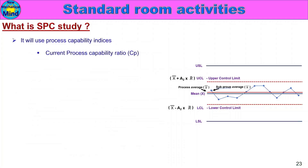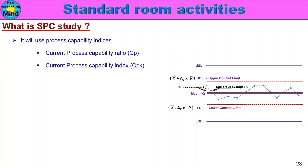Process Capability Indices used are: first, Current Process Capability Ratio, CP; and Current Process Capability Index, CPK. Initial Process Study uses PP and PPK, while SPC Study uses CP and CPK. The expected CP and CPK values will be greater than 1.33, meaning the process would consume less than 75% of tolerance.